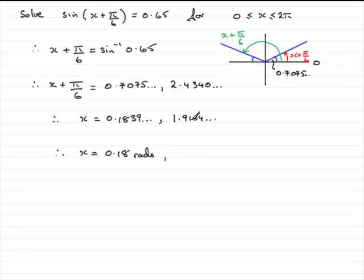And the next one would be 1.91 radians, rads for short. And don't forget then just to say that they're to two decimal places, 2dp for short.